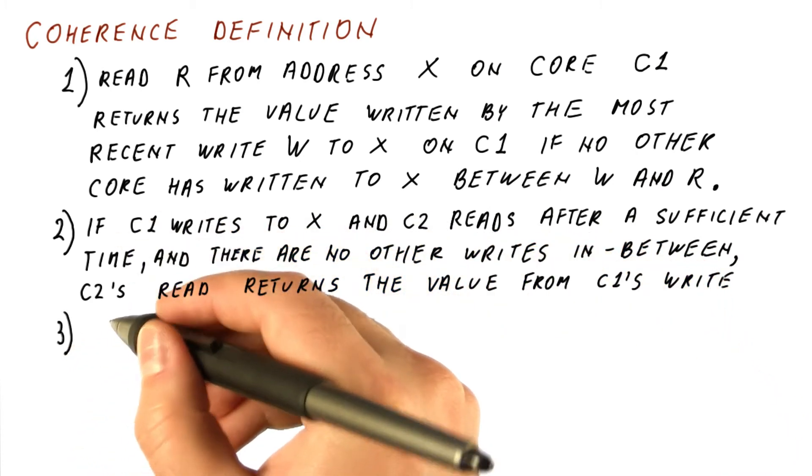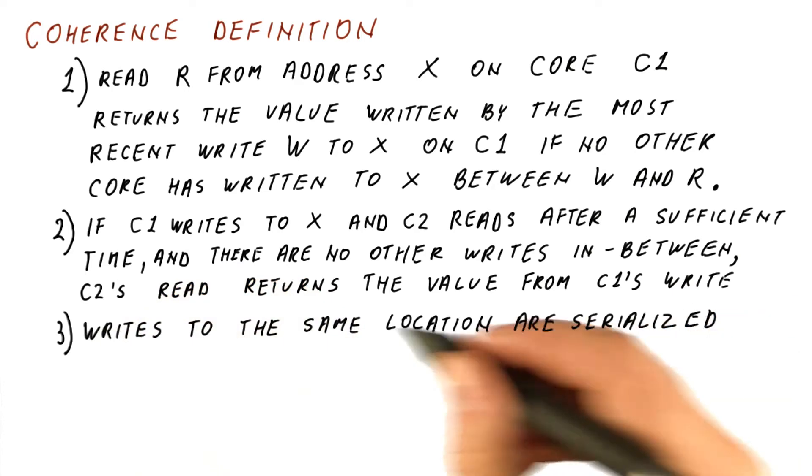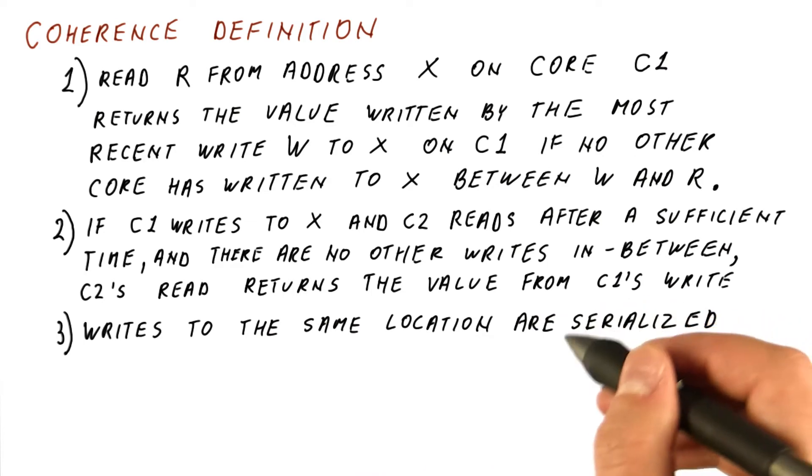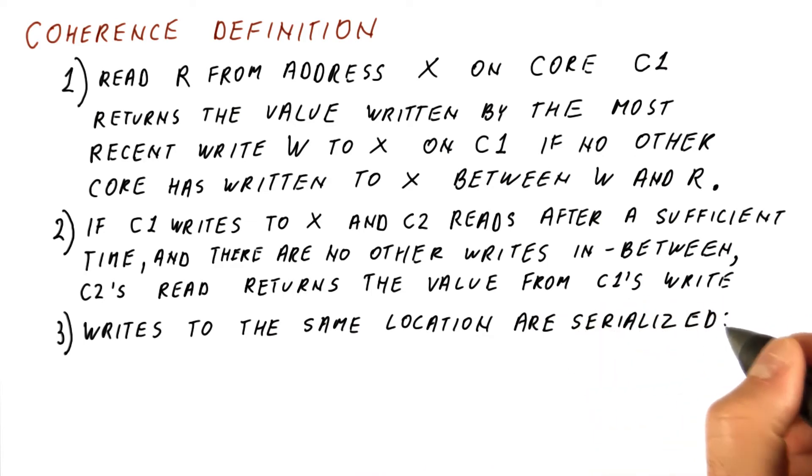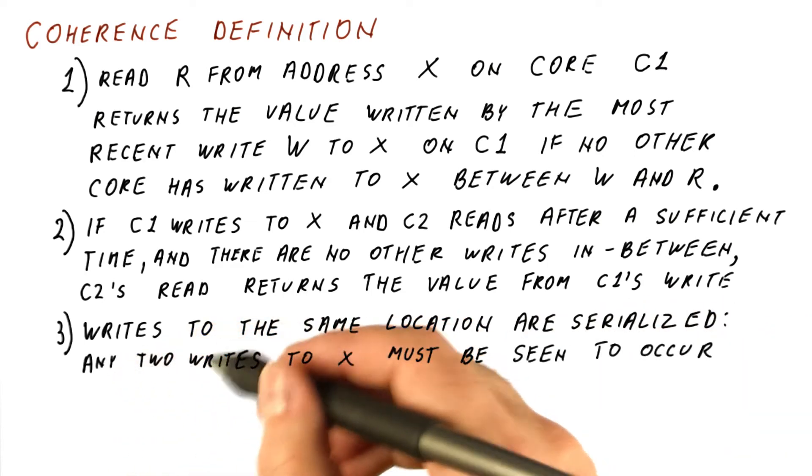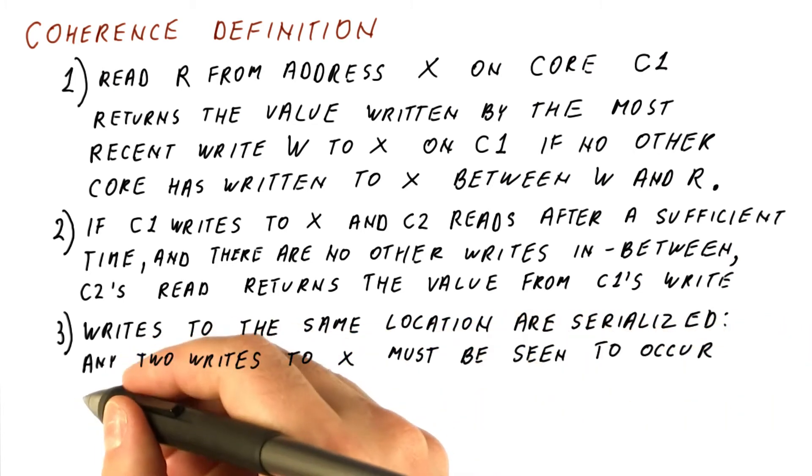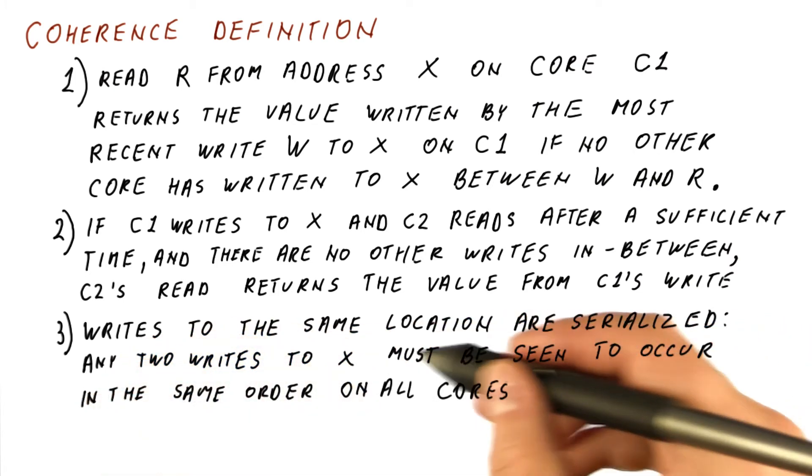And finally, the third part of the definition says that if there is more than one write to the same location, then these writes must be serialized. That is, any two writes to the same location must be seen to occur in the same order on all the cores.